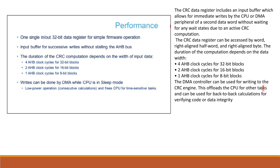1 AHB clock cycle is used for 8-bit blocks. The DMA controller can be used for writing to the CRC engine, offloading the CPU for other tasks and enabling back-to-back CRC calculations.